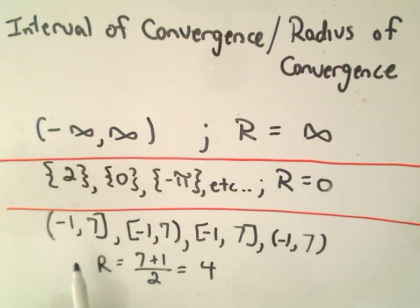Now, it doesn't matter whether the endpoints of the interval produce a convergent series or not. For example, if you have an interval like negative 1 to 7, in all four possible cases of the endpoints either converging or not converging, all you do is find the length of the interval, take the right endpoint minus the left endpoint, and divide by 2.